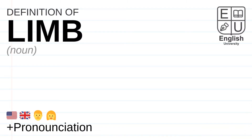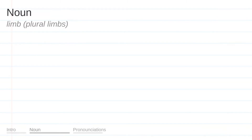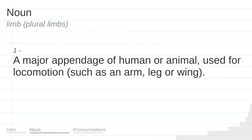Definition of the word: Limb. Noun. A major appendage of human or animal, used for locomotion, such as an arm, leg or wing.